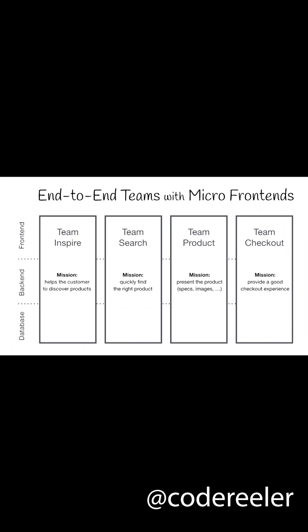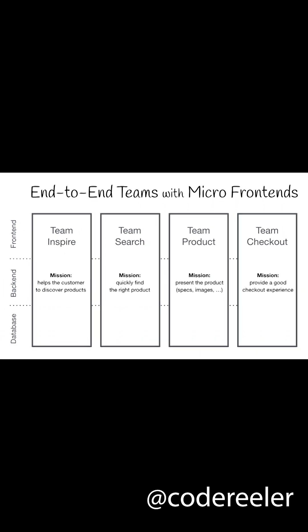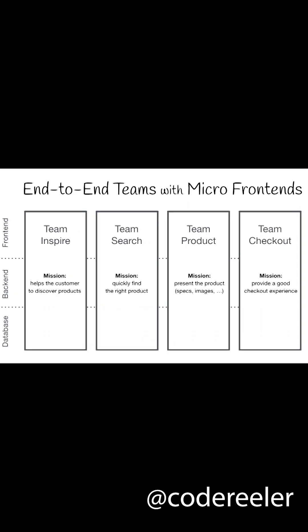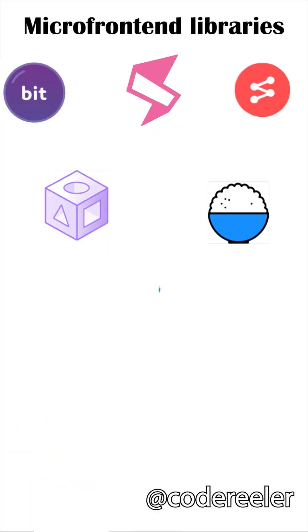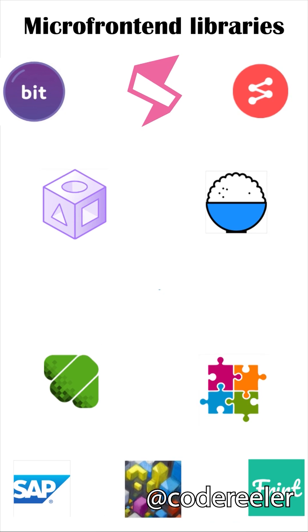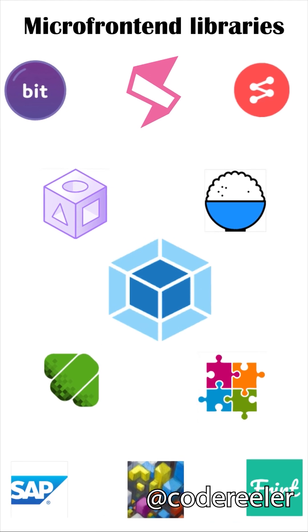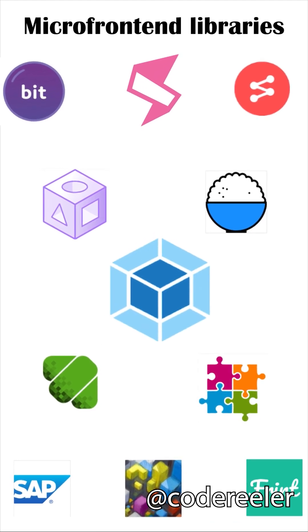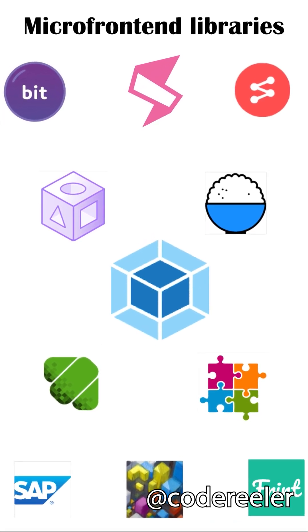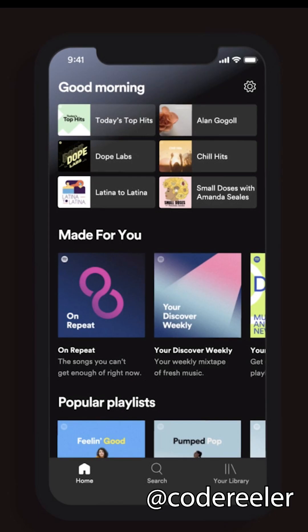This architecture is called micro front-end architecture. All the major front-end libraries and frameworks have started to provide support for this kind of development. Companies like Spotify and IKEA are already using micro front-ends, and it seems that the numbers will keep growing.